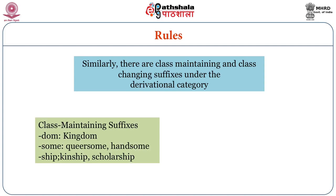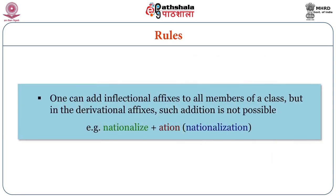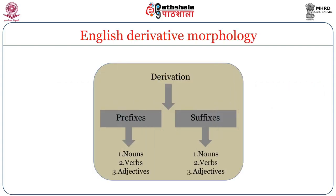Class-maintaining suffixes include '-dom' as in 'kingdom,' '-some' as in 'handsome,' '-ship' as in 'kinship' and 'scholarship.' Class-changing suffixes include '-ation' as in 'reservation,' 'confirmation,' or '-ish' as in 'boyish,' 'childish.' One can add inflectional affixes to all members of a class, but with derivational affixes such addition is not possible. You can see on your screen English derivative morphology: derivation leads to prefixes and suffixes, and in each we have nouns, verbs, and adjectives. For example, 'nationalize' + '-ation' = 'nationalization.'